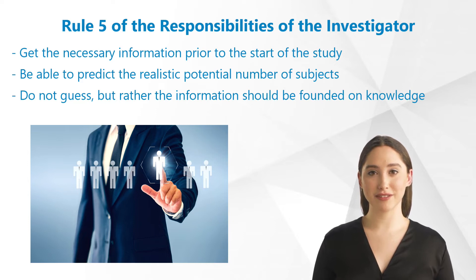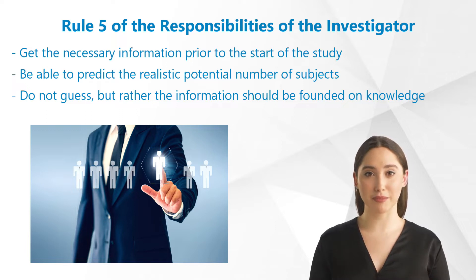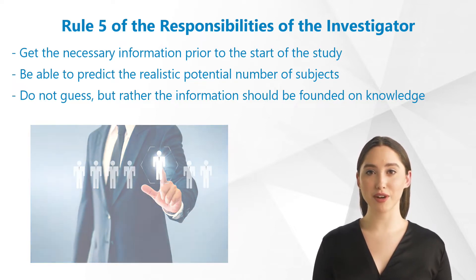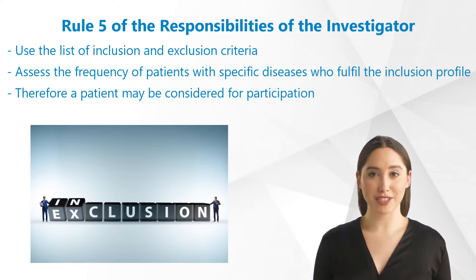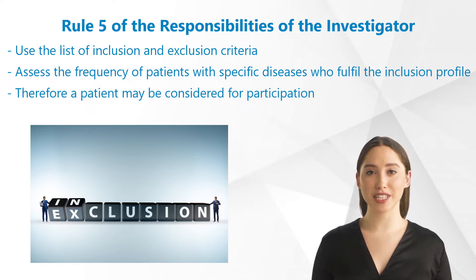Get the necessary information prior to the start of the study in order to be able to predict the realistic potential number of subjects. Do not guess — the information should be founded on past and current knowledge. The list of inclusion and exclusion criteria, for example, in combination with your medical records, enables you to assess the frequency of patients with specific diseases who fulfill the inclusion profile of the study and may therefore be considered for participation.